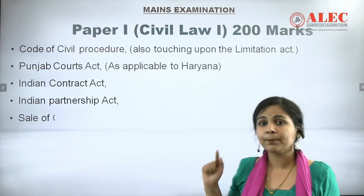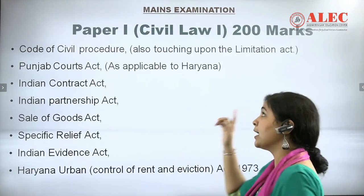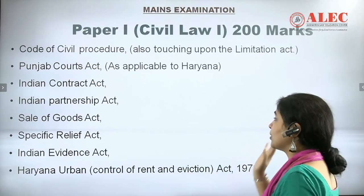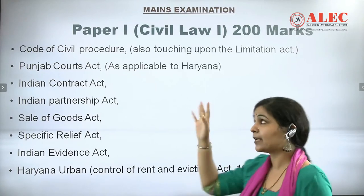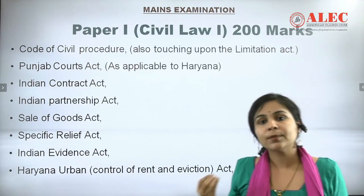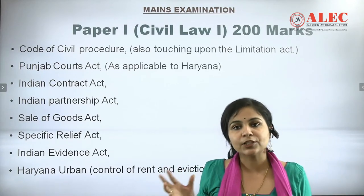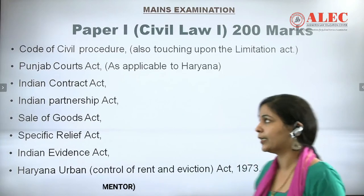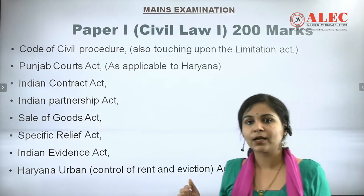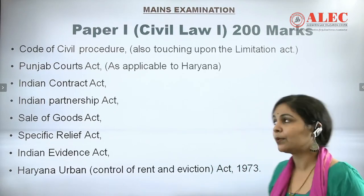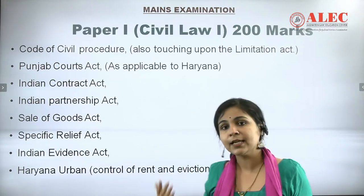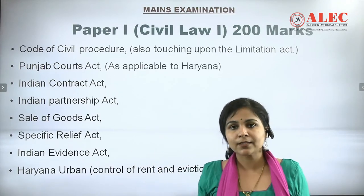Paper 1 is the Civil Law paper, carrying 200 marks. The syllabus covers the Code of Civil Procedure (CPC), including limitations, as CPC sometimes has limitation-related questions. It also includes the Punjab Courts Act, the Haryana Urban Control of Rent and Eviction Act — both local laws — as well as Contract, Partnership, Sales of Goods, Specific Relief Act (SRA), and Evidence Act.